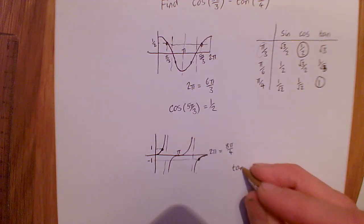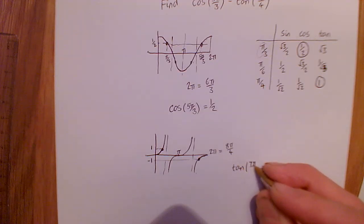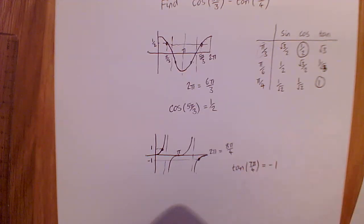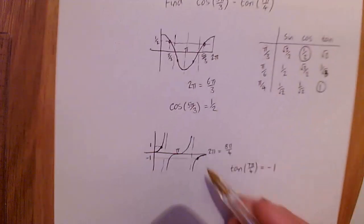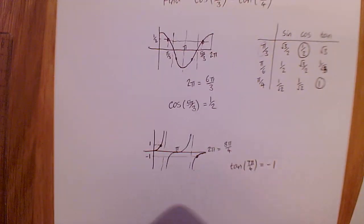And so that tells us that tan of 7π/4 equals minus 1. It's related to this value, but we need to use our graph to decide if it's positive or negative.